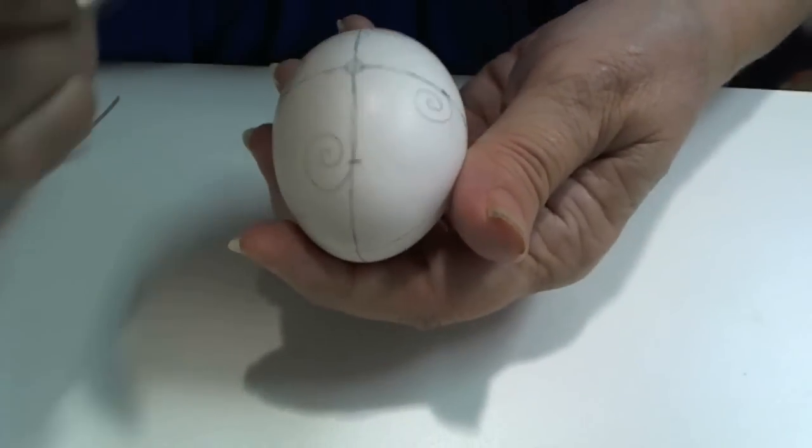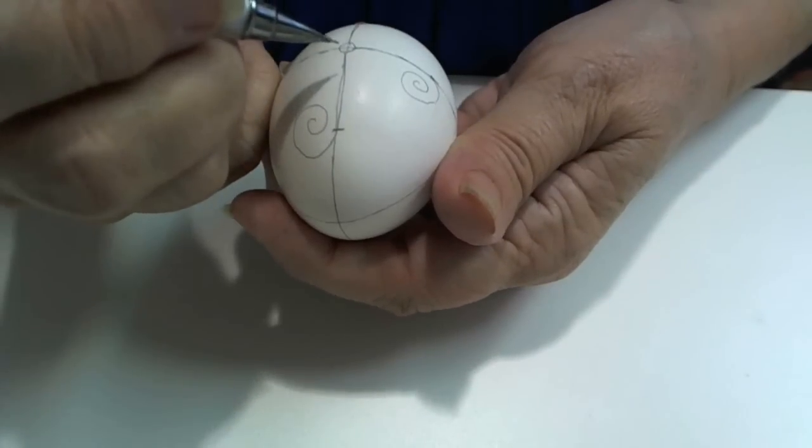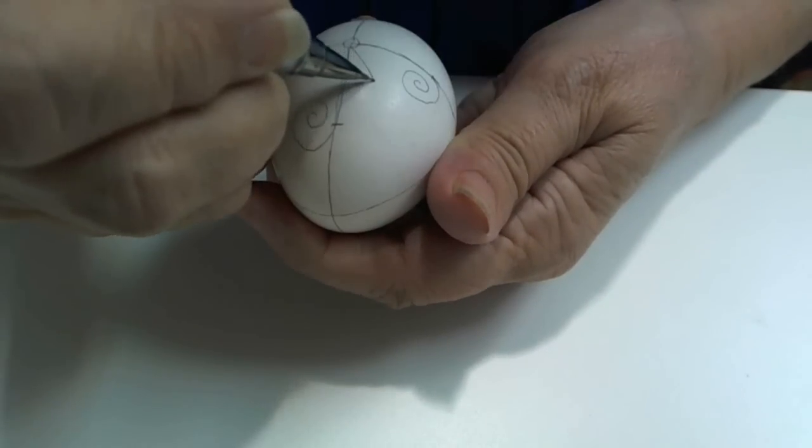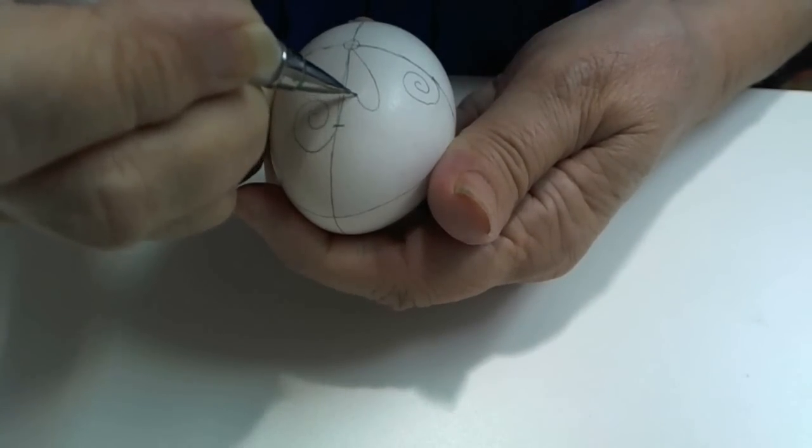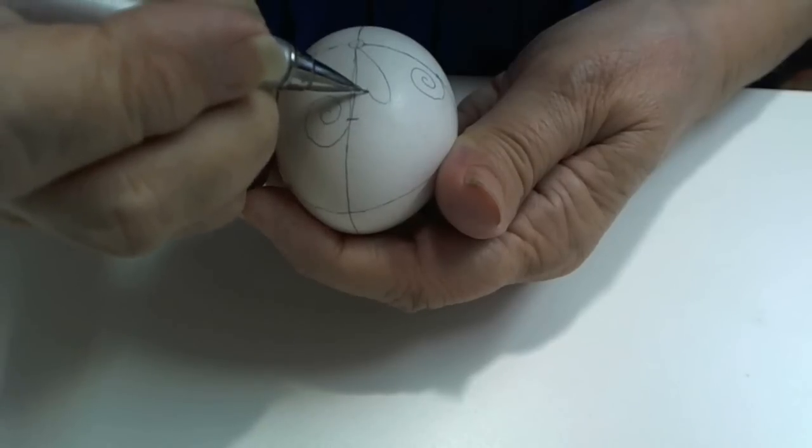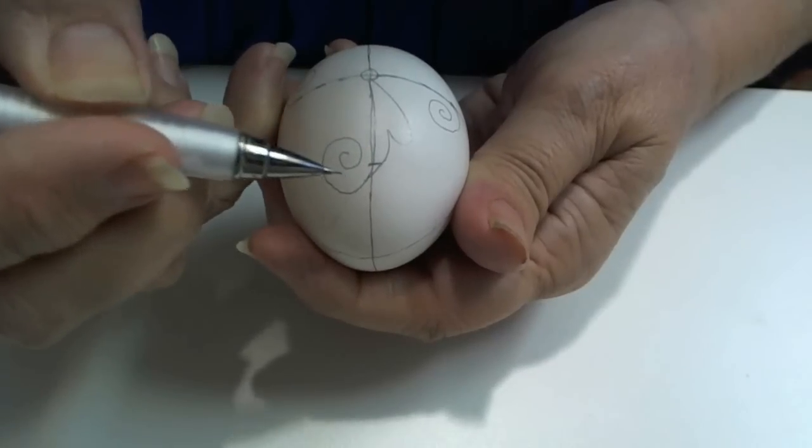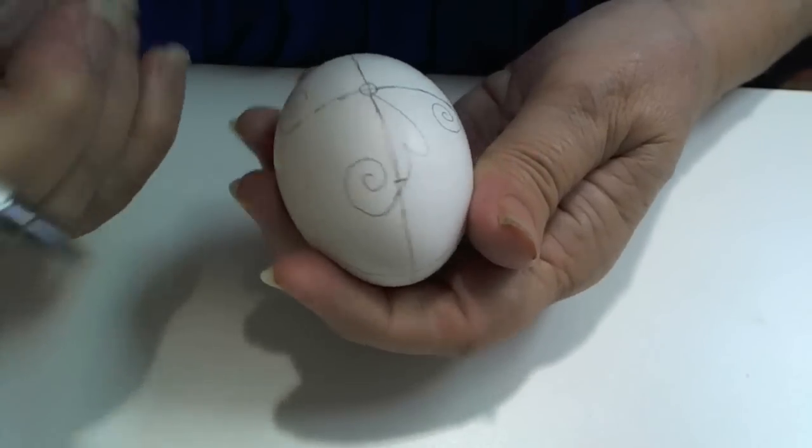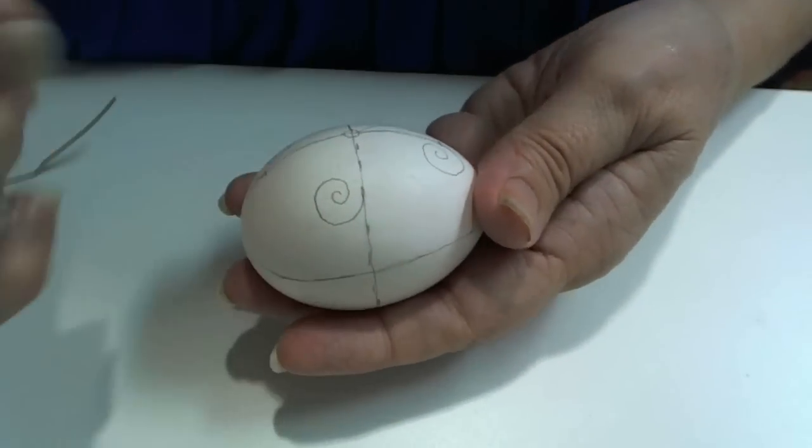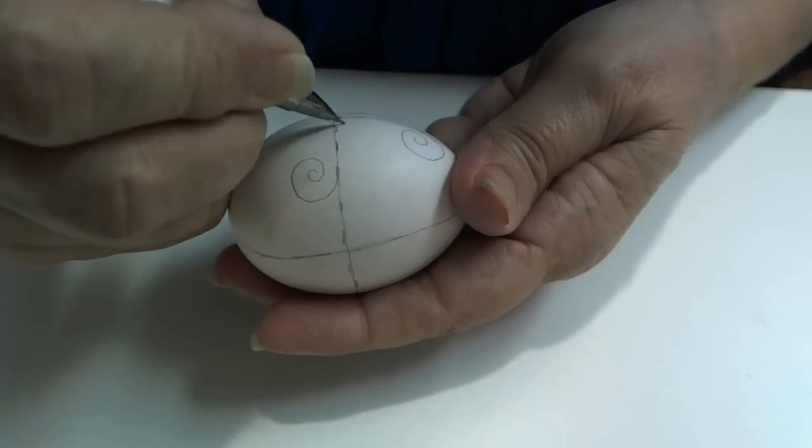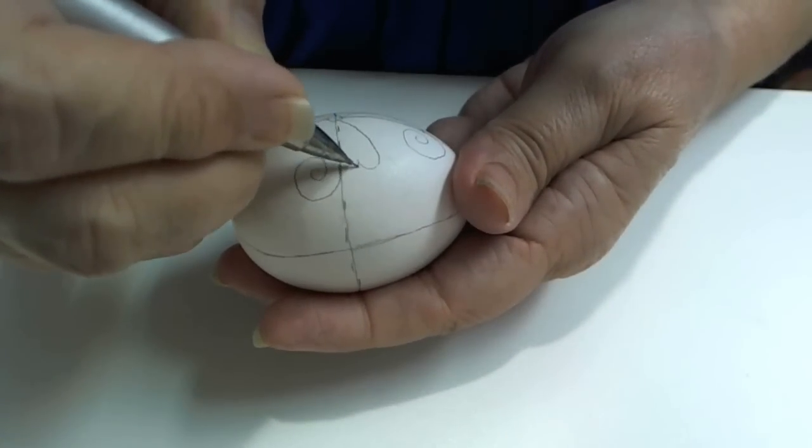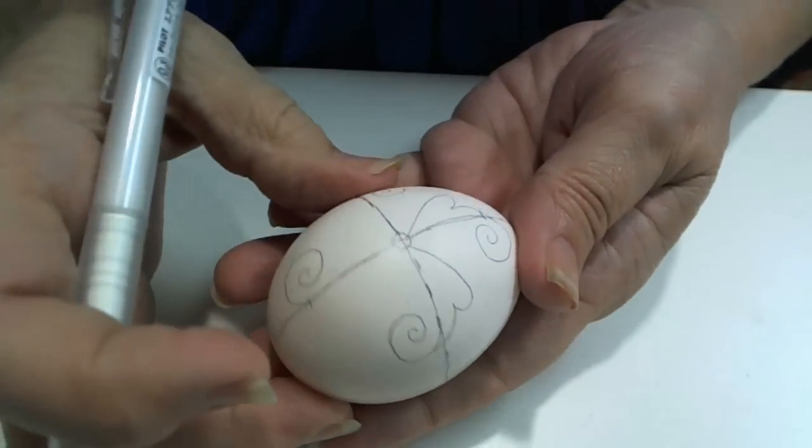Next I'm going to make what I call a half heart. And I'm going to join it to my curly cue. I will do this on all four on this side and all four on the other side.